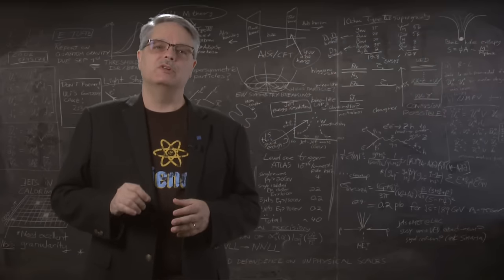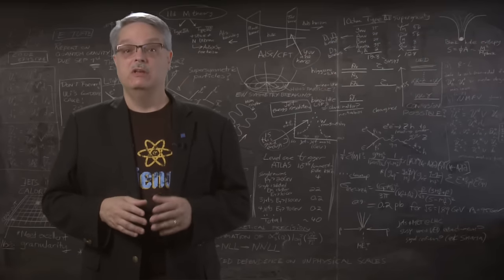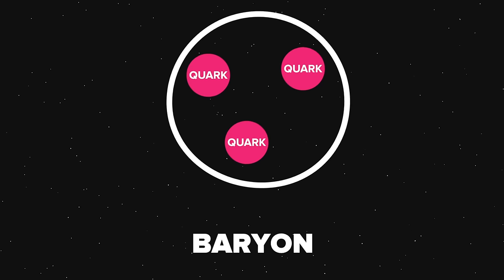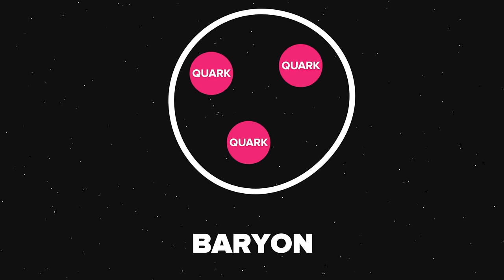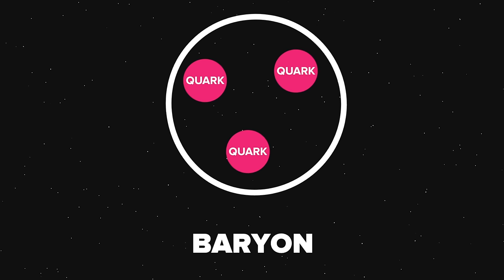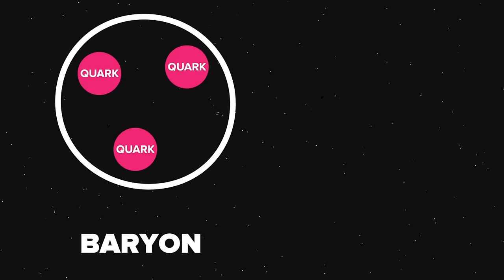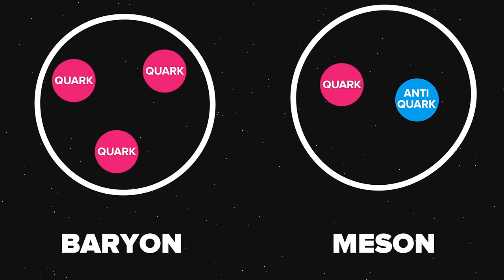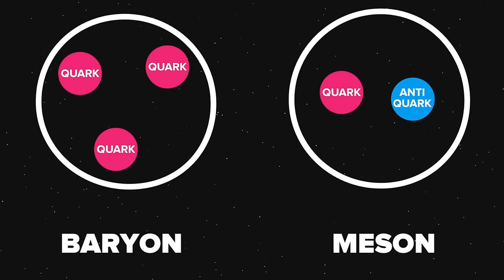Quarks have been observed to combine in only a few different configurations. For instance, one configuration is when three quarks combine to make a particle of a class called a baryon, while the other common configuration is when a quark and an antimatter quark combine to make a class of particle called a meson.